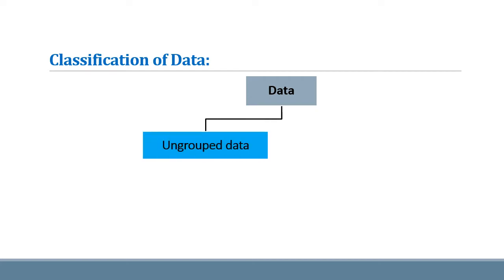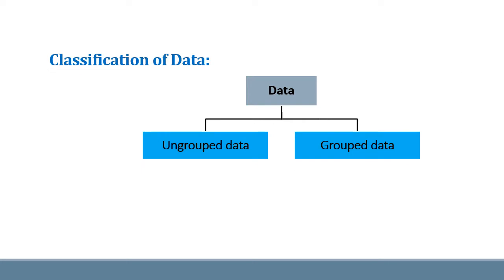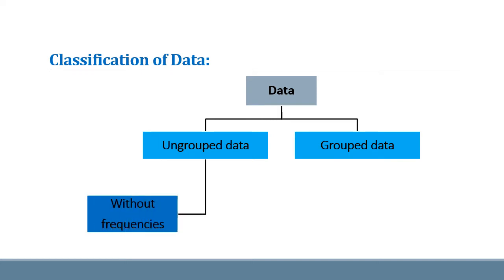Now we see the classification of data. Generally, data can be classified as ungrouped data and grouped data. Ungrouped data is also known as raw data. Grouped data is given in interval form. The ungrouped data can also be classified again as data without frequencies and data with frequencies.